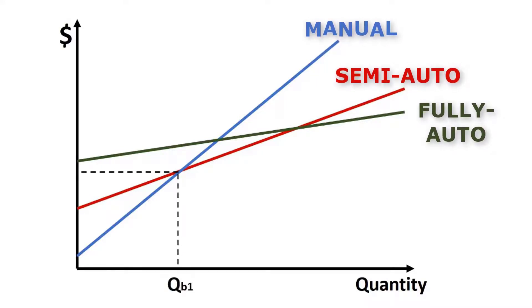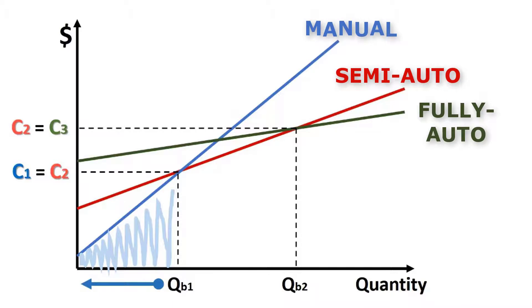Lower quantities make the manual production process very attractive cost-wise. What can be seen in the blue area of the graph? Below the break-even quantity QB1, the manual process has the lowest total cost.